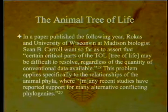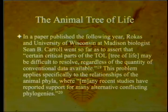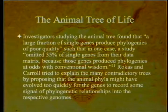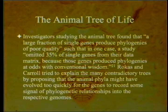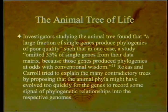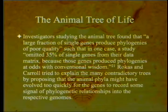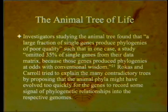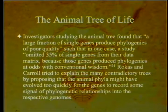This problem applies specifically to relationships of the animal phyla, where many recent studies have reported support for many alternative conflicting phylogenies. Investigators found that a large fraction of single genes produced phylogenies of poor quality — in one case, a study omitted 35% of single genes from their data matrix because those genes produced phylogenies at odds with conventional wisdom. Rokas and Carroll tried to explain the many contradictory trees by proposing that the animal phyla might have evolved too quickly for the genes to record any signal of phylogenetic relationships — in other words, the Cambrian explosion was real.